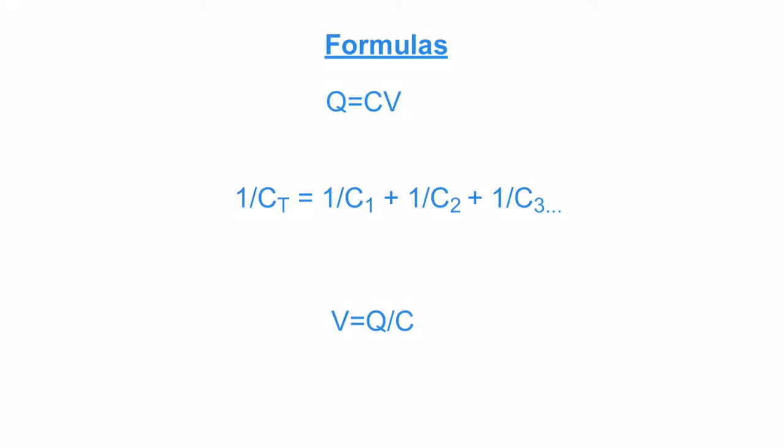It's also important that we determine what the total circuit capacitance is. This is a theoretical circuit so we don't have any resistance, but for capacitors in series, we add them up reciprocally. 1 over CT equals 1 over C1 plus 1 over C2 plus 1 over C3 dot dot dot.